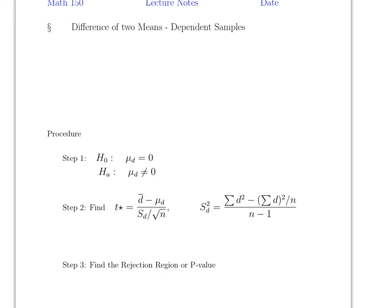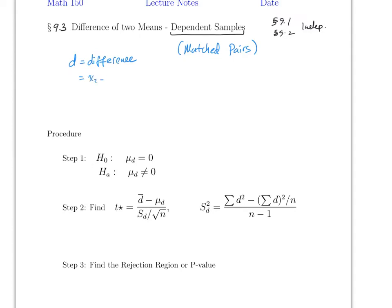This video covers Section 9.3, the topic is difference of two means. Just like Sections 9.1 and 9.2 we have two samples, but the big difference is that in this case the samples are dependent samples, which was not the case before. In this section we focus on matched pairs, where you have technically the same subjects tested twice, and D is the difference we're testing, defined as D = x2 minus x1.